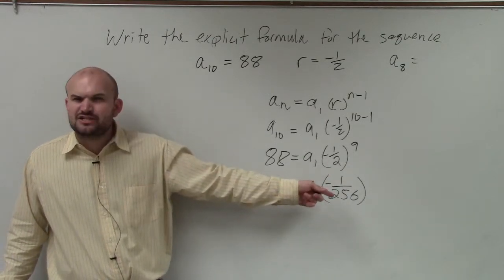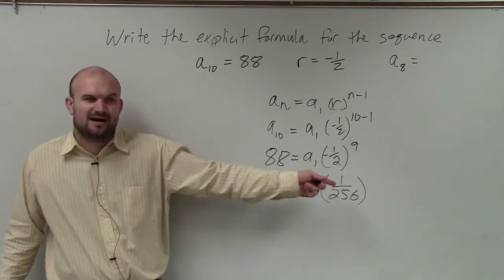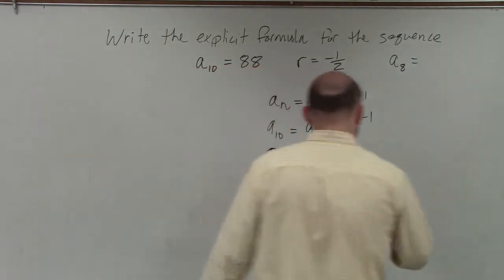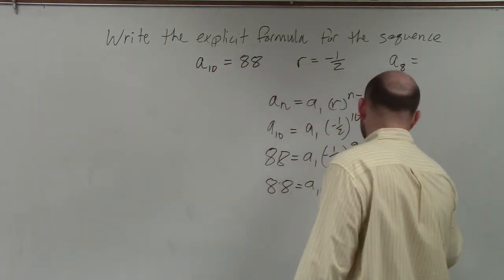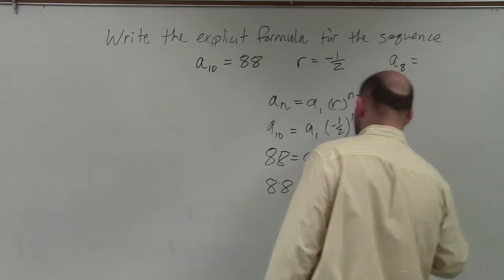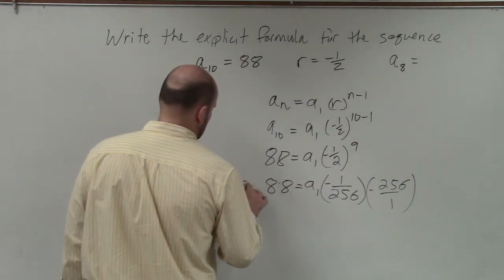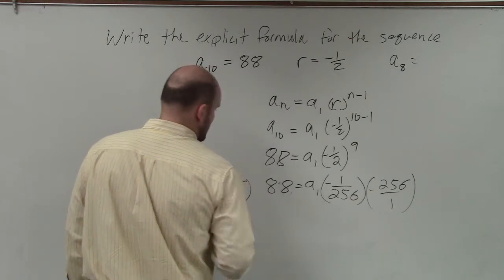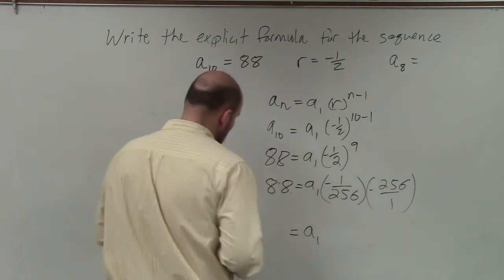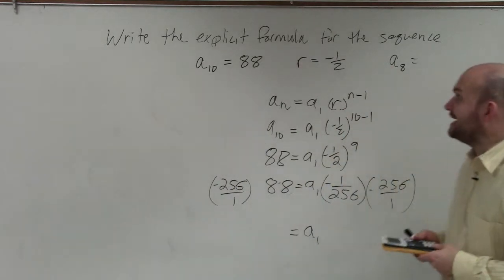Now, how do I get rid of a fraction? Do you guys remember we did this in solving equations? You multiply by the reciprocal. So let's multiply by negative 256 over 1. And therefore, a_sub_1 equals negative 256 times 88.